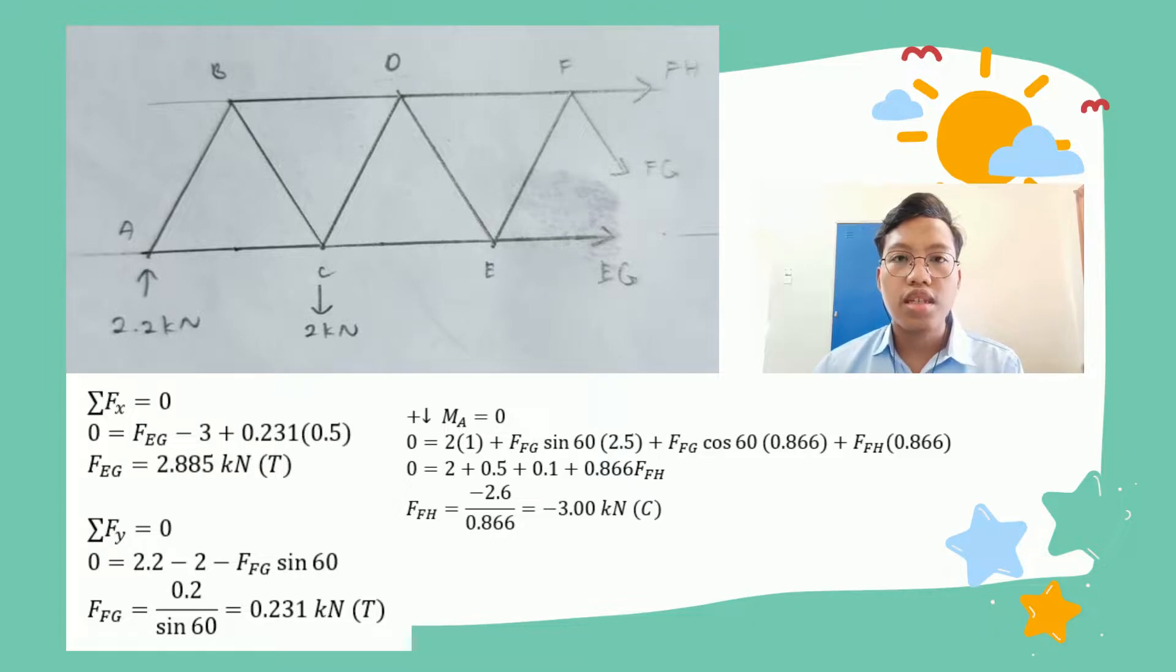To find force EG, we must use sum of forces for X. Zero equals EG plus FH plus FG cos 60. Zero equals force EG plus FH but the value is negative 3, we will use negative 3. We add force FG cos 60. Force FG equals 0.231 and cos 60 is 0.5. We will get force EG equals 2.885 kilonewton, and it is tension. That's all from me. Thank you.